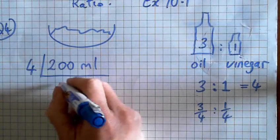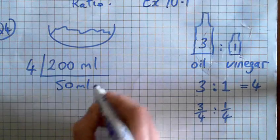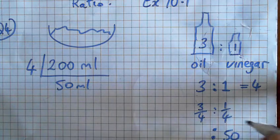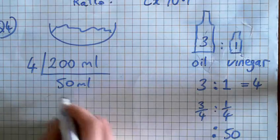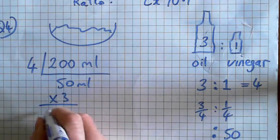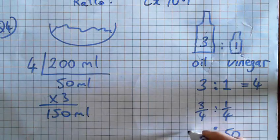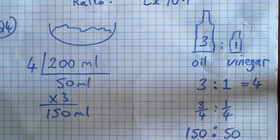So 1 quarter of 200, 50ml, so that's 1 quarter. So 50ml is vinegar, and then we multiply by 3. 3 quarters is 150ml of oil,